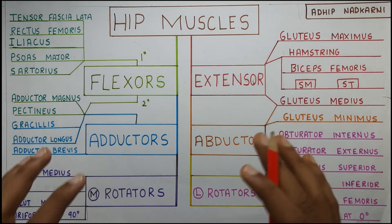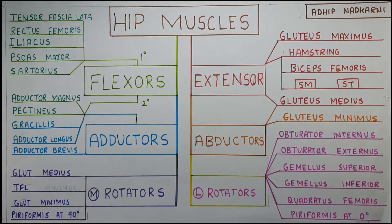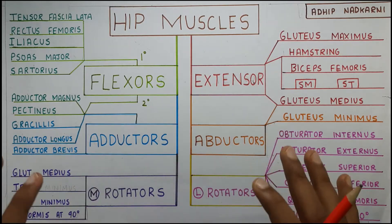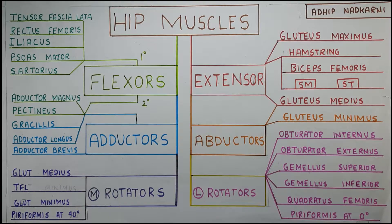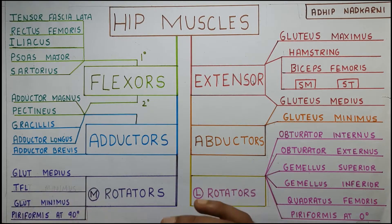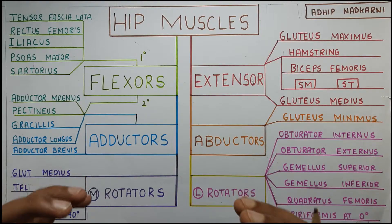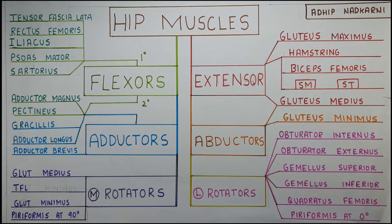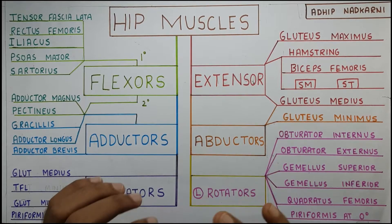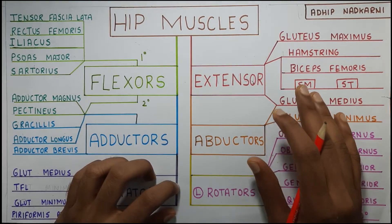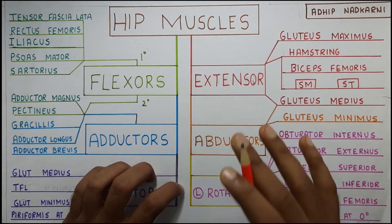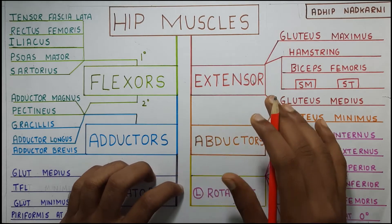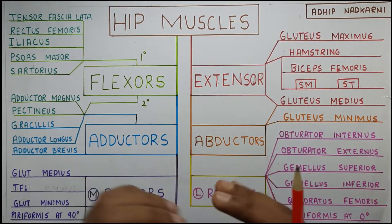Before we learn about each muscle, I will first give you an overview of all the muscles. Before that I like to start with some qualities of the hip muscle. The main function of your hip joint is weight bearing. So the muscles around the hip joint help provide stability and support the weight-bearing function. A very important fact is that these muscles work best in the mid range, that is when they are in a slightly stretched position.